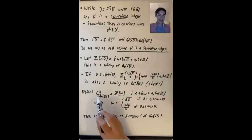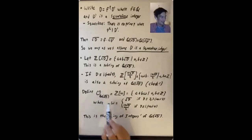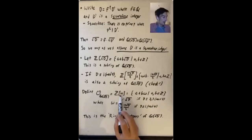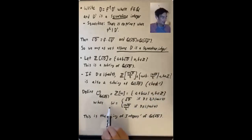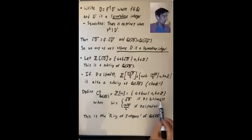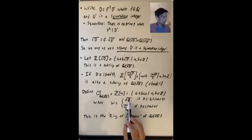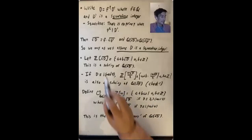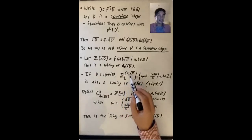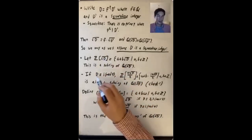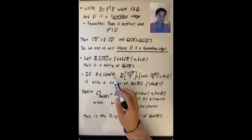Now we define the object O sub Q(√D), which equals Z adjoin ω, the set of all A + Bω with A, B in Z, where ω depends on D mod 4. If D is 2 or 3 mod 4, then ω = √D, giving Z[√D]. If D is 1 mod 4, then ω = (1 + √D)/2, giving Z[(1 + √D)/2]. The case D ≡ 0 mod 4 doesn't arise because we assumed D is square-free.